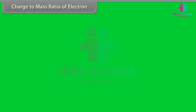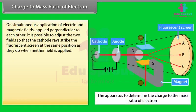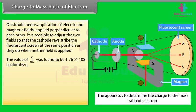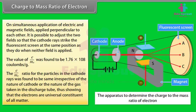Charge-to-mass ratio of the electron: On simultaneous application of electric and magnetic fields perpendicular to each other, it is possible to adjust the two fields so that cathode rays strike the fluorescent screen at the same position as when neither field is applied. The charge-to-mass ratio of the electron was found to be 1.76 × 10⁸ coulombs per gram, and was the same regardless of the nature of the cathode or the gas, showing electrons are a universal constituent of all matter.